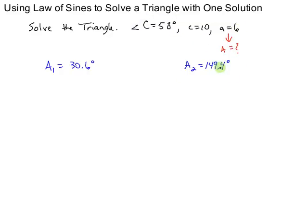A sub 2 is 149.4 and angle C is 58. If you add those together, you get something bigger than 180. So this is not a possibility for angle A. Because if it were, you would not be able to get a triangle where the angles add up to 180. So this is the only possibility for angle A.